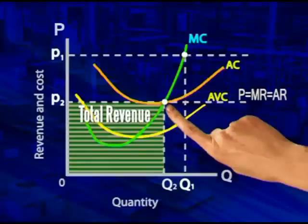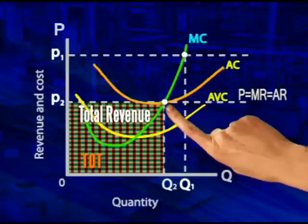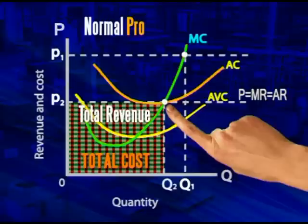At this point, all you accountants out there may be wondering if I'm completely mad. Surely if a firm's total revenue is the same as its total cost, it's not making any profit. Not quite. Remember opportunity costs. Economists look at profits differently to accountants. Economists include normal profits in the total cost to a firm.